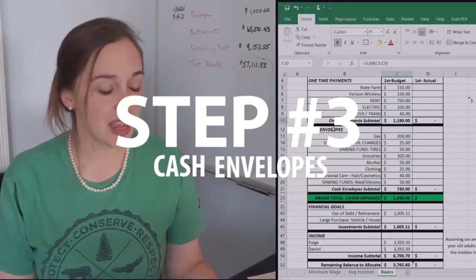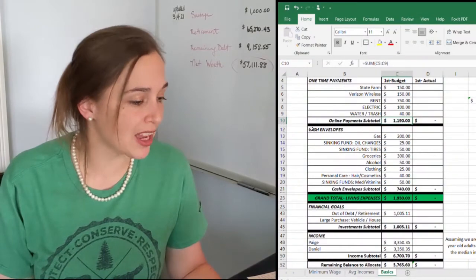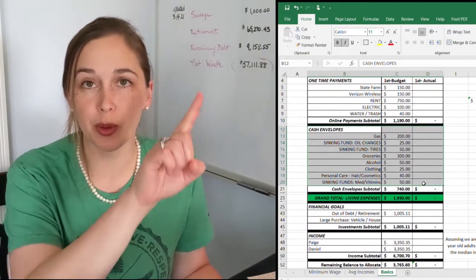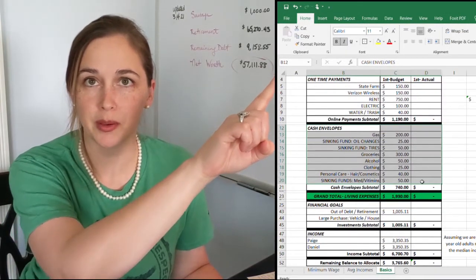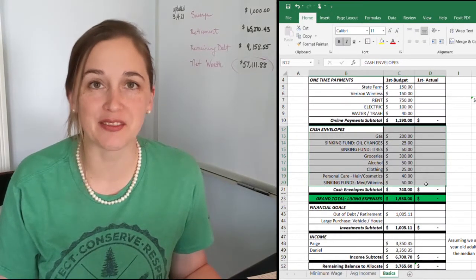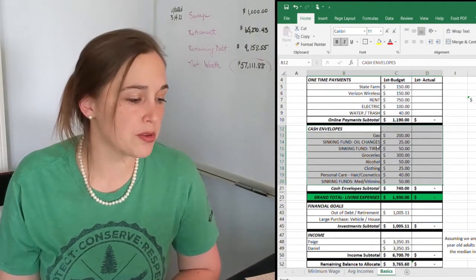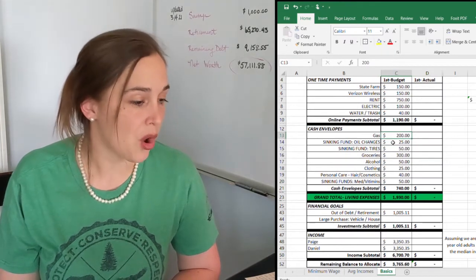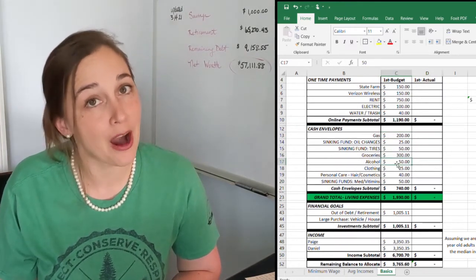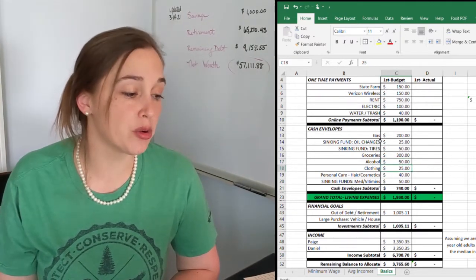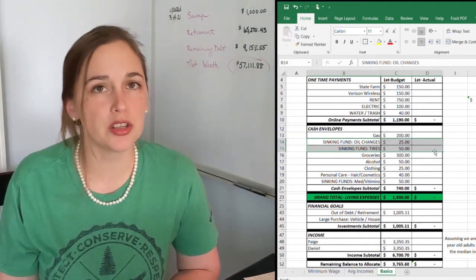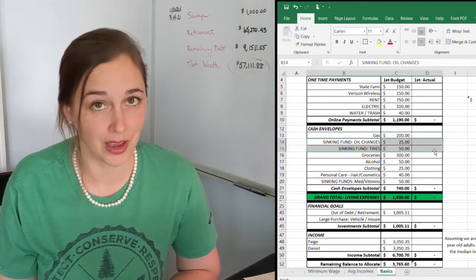Step three is going to be your cash envelopes. I will link to a video about cash envelopes that I've done in the past. The cash envelopes are going to include things like gas or groceries, if you want to set aside a separate alcohol budget or clothing. This is also a great place to have vehicle maintenance and also a place to start your sinking funds.